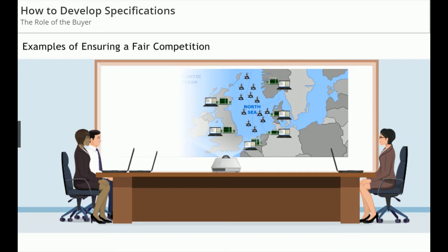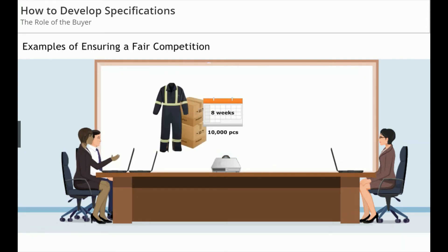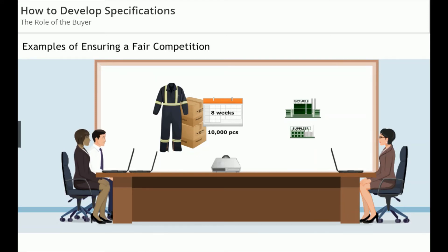If we're talking about the uniforms themselves, if we specify that we need 10,000 uniforms delivered within the next eight weeks, there may only be a small number of suppliers that have the capacity to fulfil the requirement. But if we required delivery over two years instead of eight weeks, we'd open up competition to smaller and potentially lower-cost suppliers.